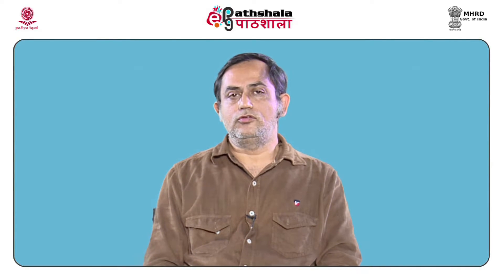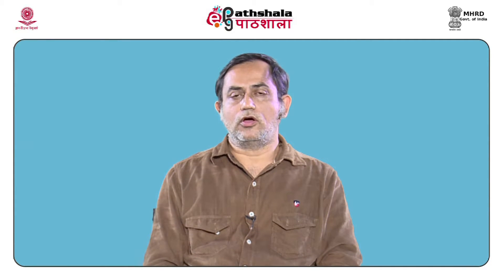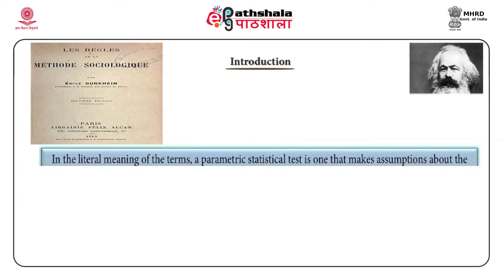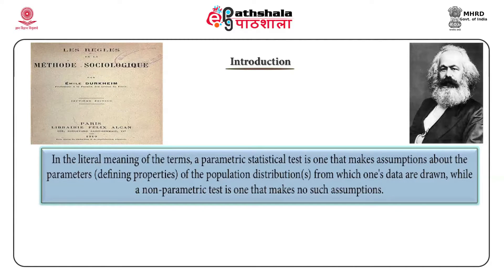Combining these two things together, we are trying to understand the essential dynamics of the use of statistics as a meaningful tool in our social scientific research. In the literal meaning of the terms, a parametric statistical test is one that makes assumptions about the parameters — the defining properties of the population distributions from which one's data are drawn — while a non-parametric test is one that makes no such assumptions.